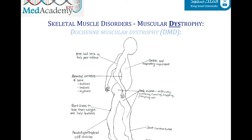Children with Duchenne muscular dystrophy are usually asymptomatic until age three to five, when they develop weakness presenting as clumsiness, inability to keep up with peers, and frequent falls. Weakness progresses gradually, and most patients need a wheelchair by age seven to twelve. Patients also develop imbalance between agonist and antagonist muscles, leading to abnormal postures, contractures, and joint immobility.